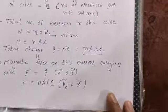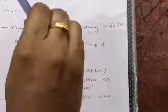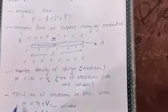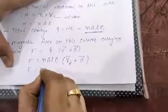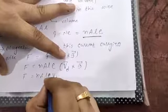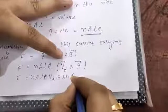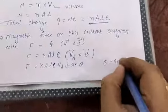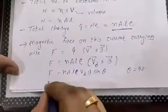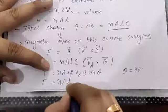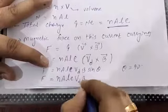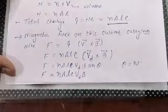The velocity of electron is in the direction of current, and magnetic field is inward. So the direction between velocity of electron and magnetic field is perpendicular — 90 degrees. Here we can say that force F equals N·A·L·e·Vd·B·sin θ. But θ is 90°, sin 90° is 1. So magnetic force F is written as N·A·L·e·Vd·B. This is the magnetic force acting on this wire.